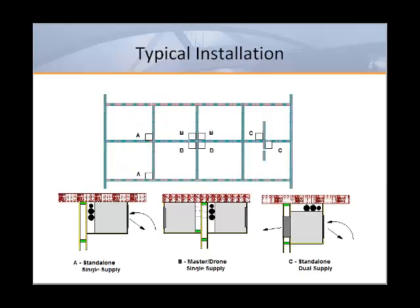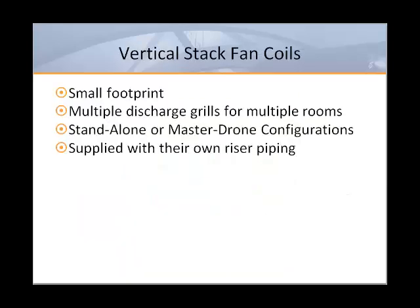Here are three typical installations for vertical stack units. The master-drone installation is the most cost-effective due to the use of one riser piping set supplying two fan coil units. Between configurations A, B, and C, B is the most cost-effective as the two riser pipe sets can service four units, while in A and C, two riser piping sets can service only two units. To summarize the vertical stack fan coil advantages: they have a small footprint, can have multiple supply grills for multiple rooms, stand-alone or master-drone configurations for multiple rooms or tenants, and they are supplied with their own riser piping.